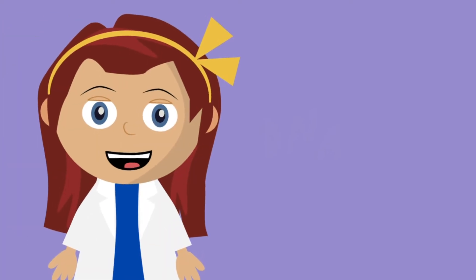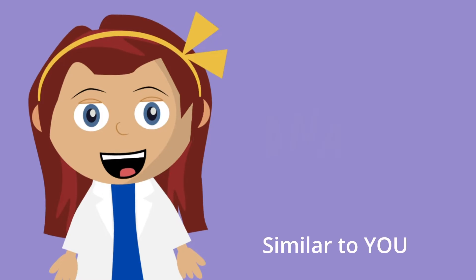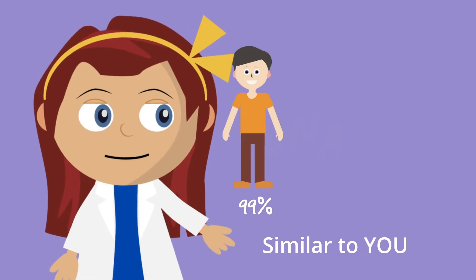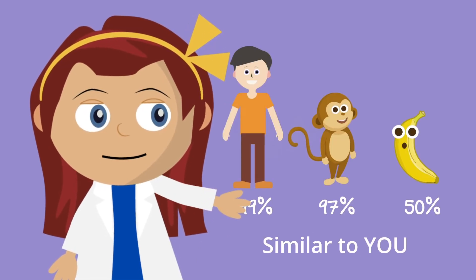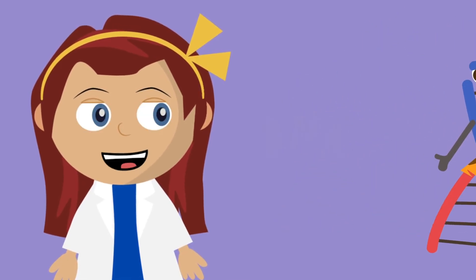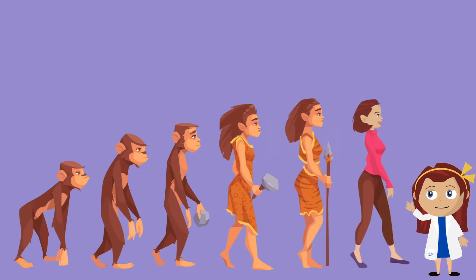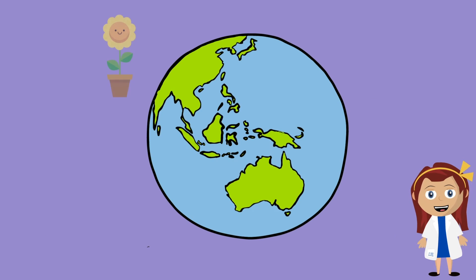You don't just share DNA in common with your family though. The DNA in your body is very similar to other humans and even to animals and plants. That's because we all got our DNA from a common ancestor, like a great, great, great grandmother millions of years ago. All life on earth is related.